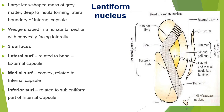Moving on to the lentiform nucleus — in this horizontal section of the cerebral hemisphere you can make out the lentiform nucleus, head of the caudate nucleus, the thalamus and the internal capsule. The suffix 'form' means similar to; 'lenti' refers to lens. So this lentiform nucleus resembles a lens in its shape.